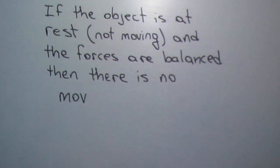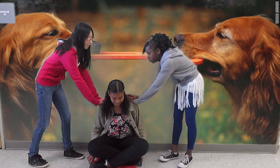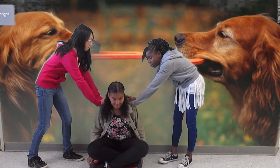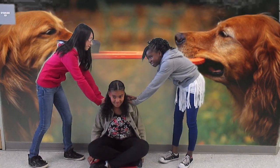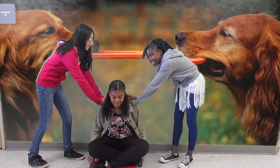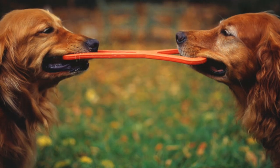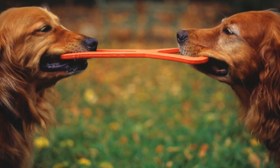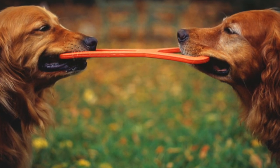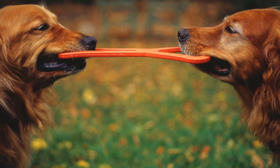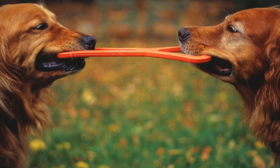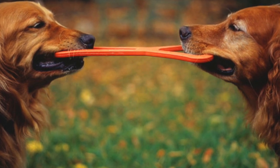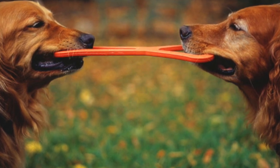In this example students are pushing against one student and she is not moving. Just like the dogs in the background are pulling but there is no movement happening. These are two examples of balanced forces.